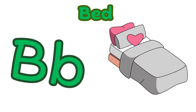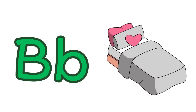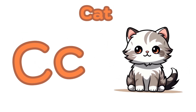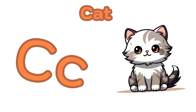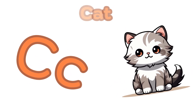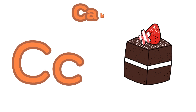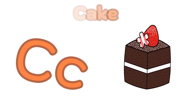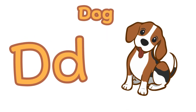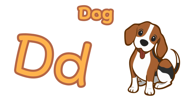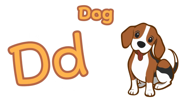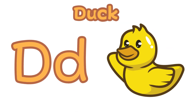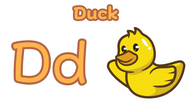C is for cat. C, c, c — cat. C is for cake. C, c, c — cake. D is for dog. D, d, d — dog. D is for duck. D, d, d — duck.